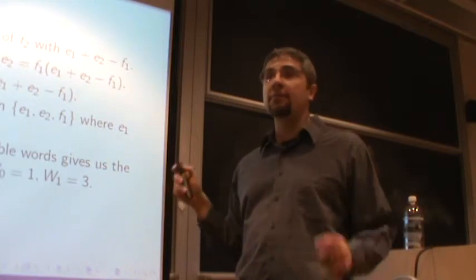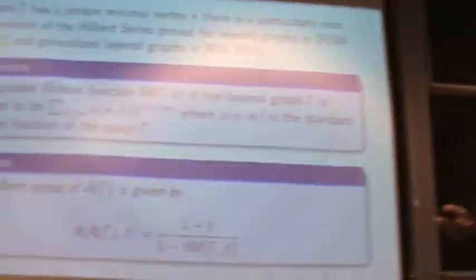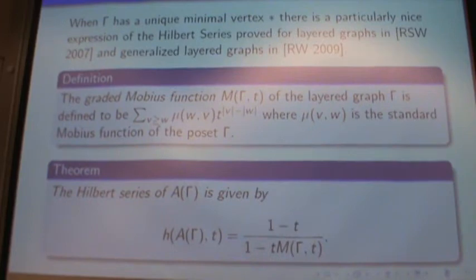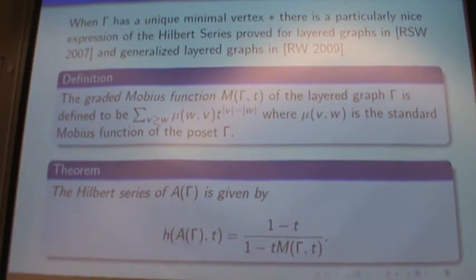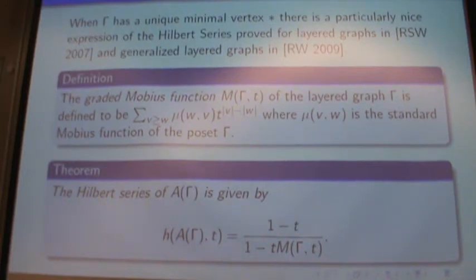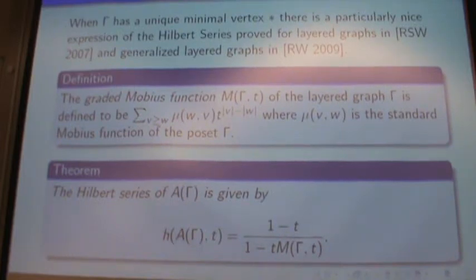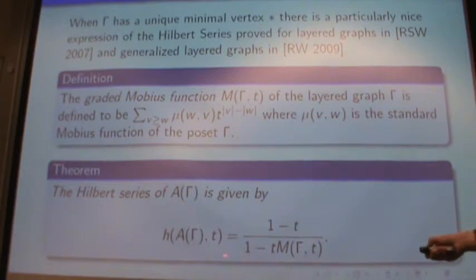In general, finding the Hilbert series of A_gamma is much harder — we only had one relation here, but in general there are lots of relations. However, there is one theorem for finding the Hilbert series of A_gamma, proved for both layered graphs and generalized layered graphs by Retakh, Serconek, and Wilson, and it comes back to the Möbius function. We take the graded Möbius function of the entire layered graph: for the coefficient of T^i, we take any two elements where the difference in layers is i and sum their Möbius functions. Then the theorem lets us compute the Hilbert series of A_gamma from this.